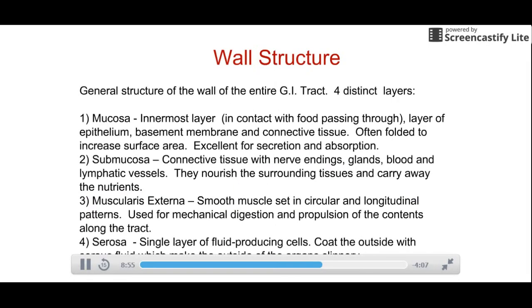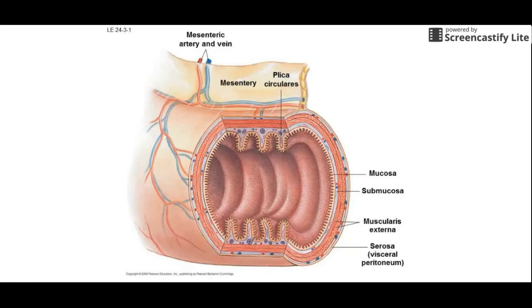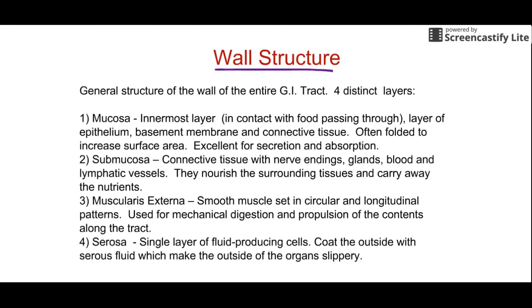When you look at the side of a digestive tract, there are distinct layers. The mucosa is the innermost layer that contacts food as it passes through — it has lots of folds, including villi and microvilli, and is where enzyme secretion and nutrient absorption occur. Underneath is the submucosa, connective tissue full of blood vessels. When you absorb nutrients, they pass through the mucosa into the submucosa and into the blood vessels to be carried away.